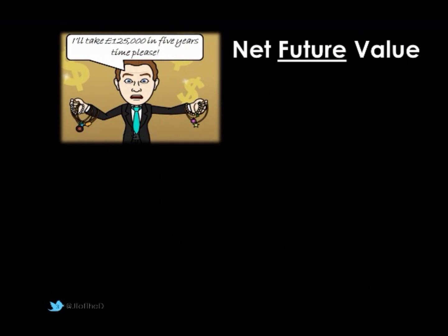Option C: we talked about taking £125,000 five years down the road. So in five years' time, what is that worth? Well, we'd have had nothing until that point. In five years' time we'd get our cheque — £125,000 — so that's its future value.